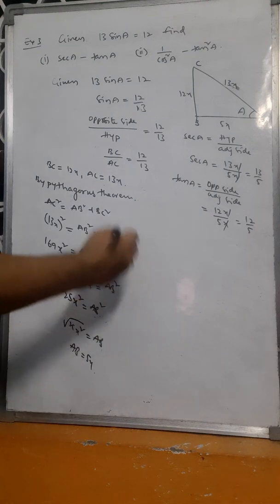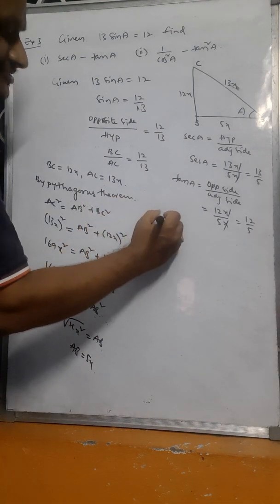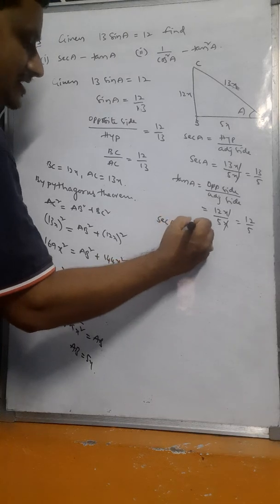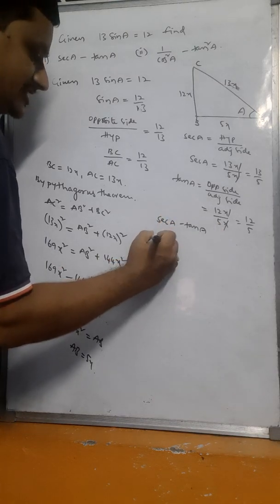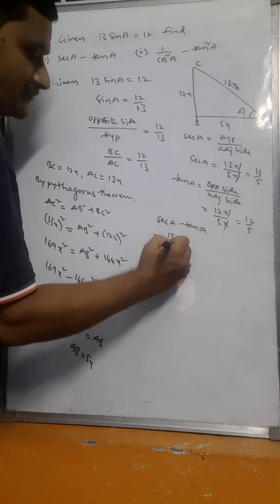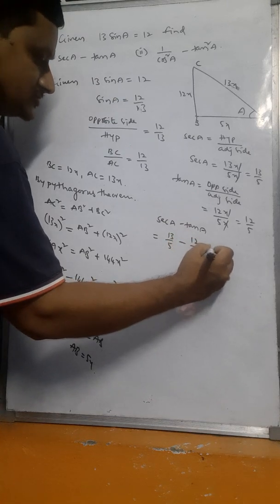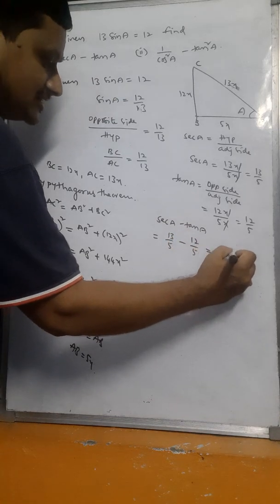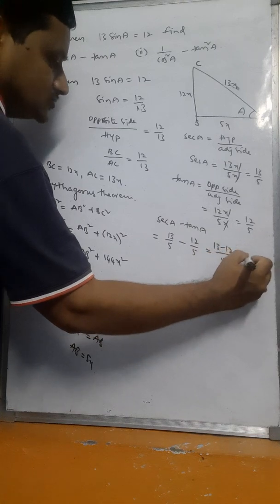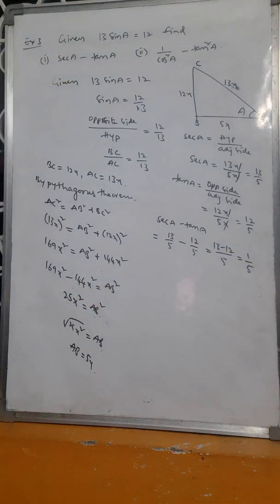Now sec A minus tan A equals 13 by 5 minus 12 by 5. The LCM is 5, so that is 13 minus 12 over 5, which equals 1 by 5.